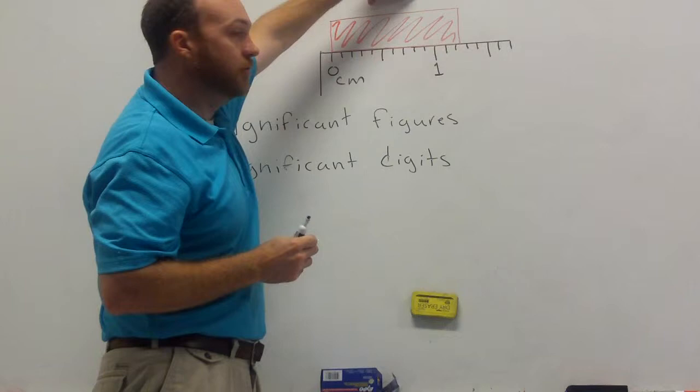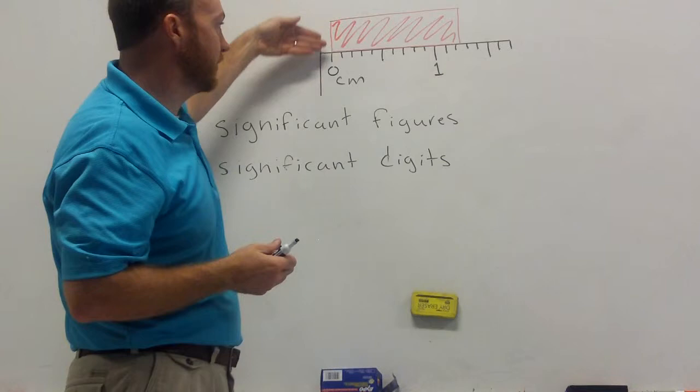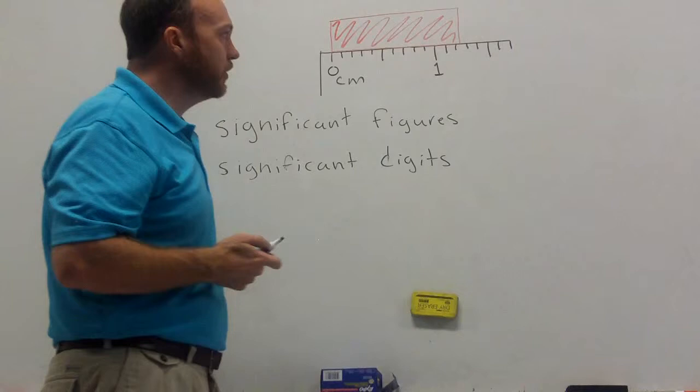So, let's say we want to make a measurement, and we are going to measure an object, this red rectangle. First, we need to make sure that the end of our object is lined up with the zero on our ruler, and then we measure out to the end.